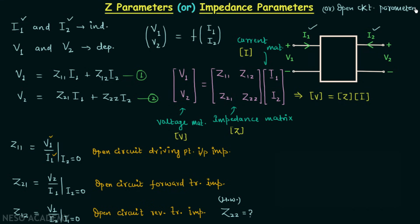So there are three names for these four parameters: z parameters, impedance parameters, and open circuit parameters.